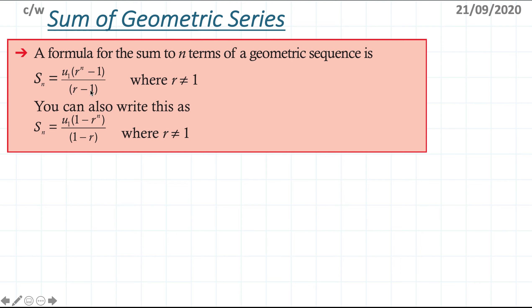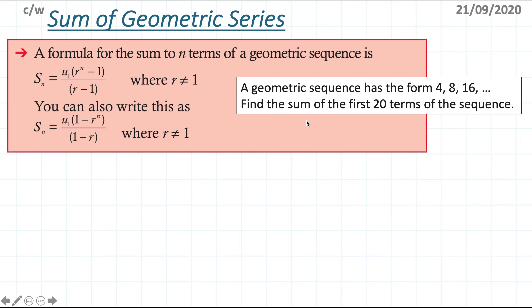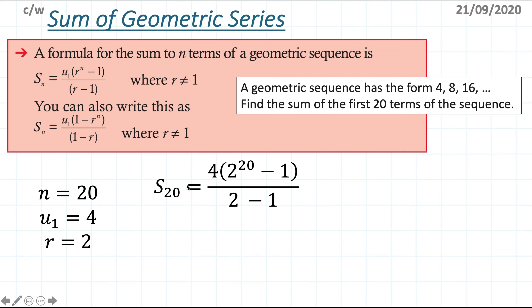For the first example I have a geometric sequence and need to find the sum of the first 20 terms. I identify: n = 20, first term u1 = 4, and common ratio r = 2 since I multiply by 2 each time. I can now plug these values into the sum formula.